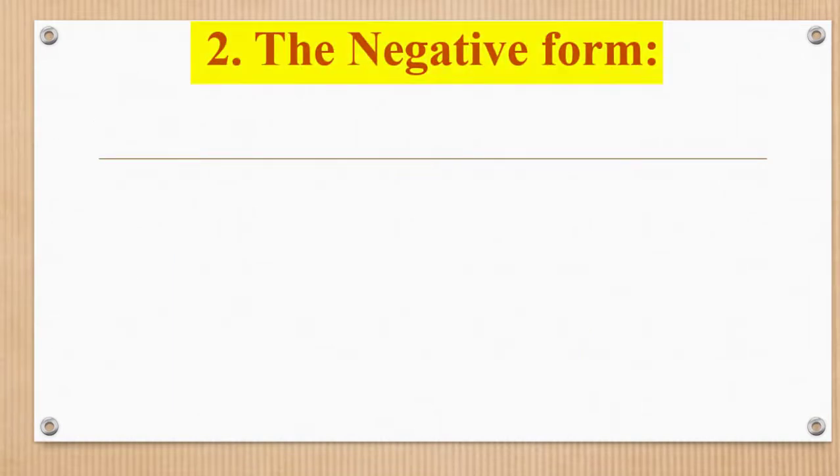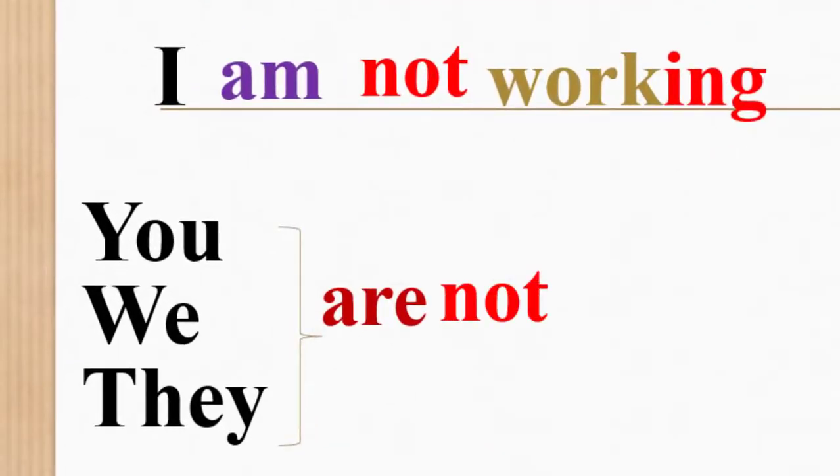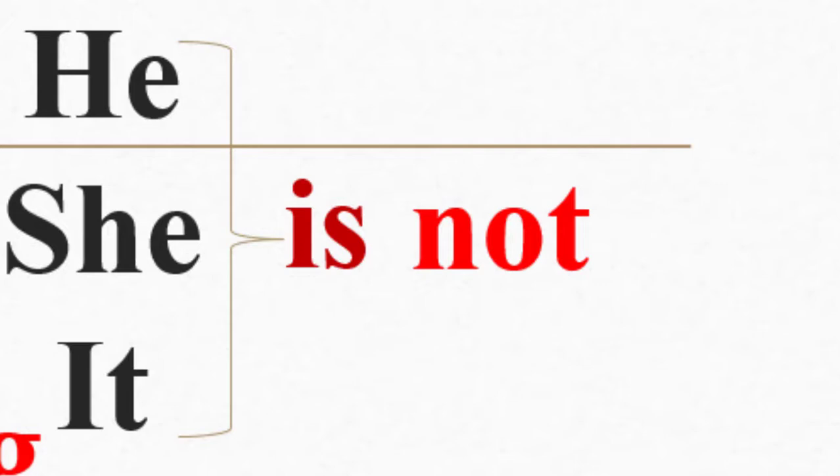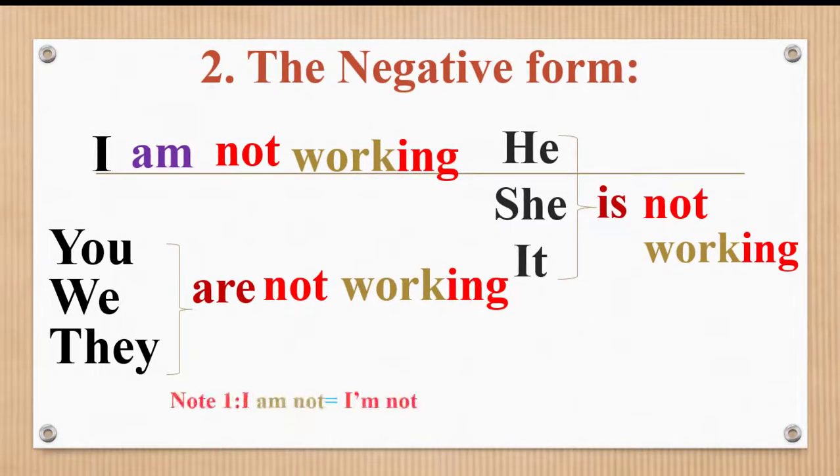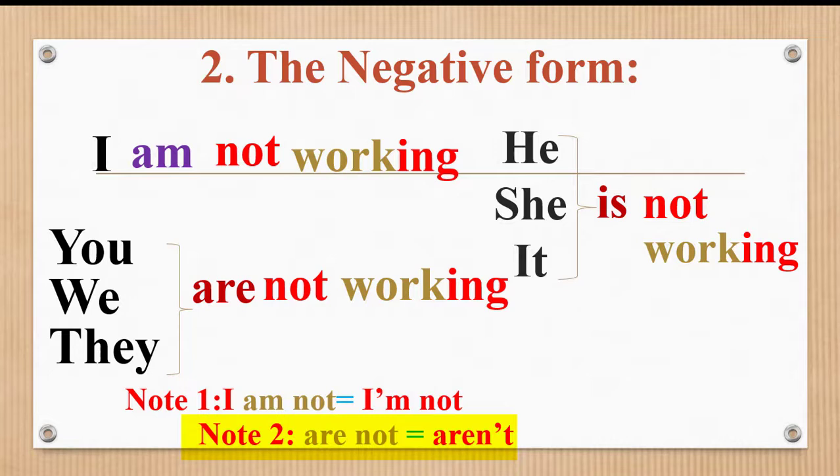The negative form. I am not working. Let's have a look at note here. We have note one: I am not, the short form is I'm not. Note two: are not, the short form is aren't. Note three: is not, the short form of it is isn't.